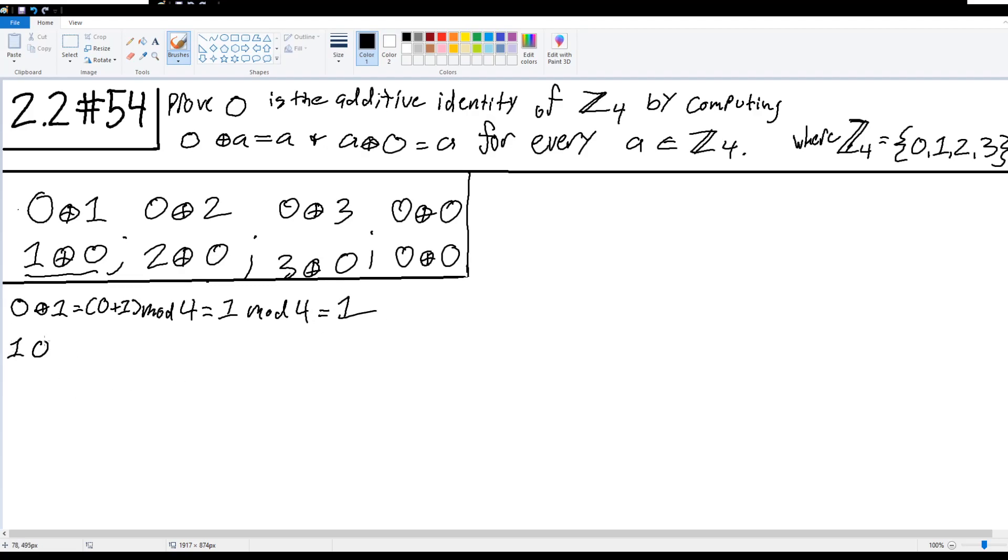And likewise, 1 modular addition 0 equals 1 plus 0 mod 4, which obviously we can see outputs the same result. That's our first pair done, we'll move on to the next one.